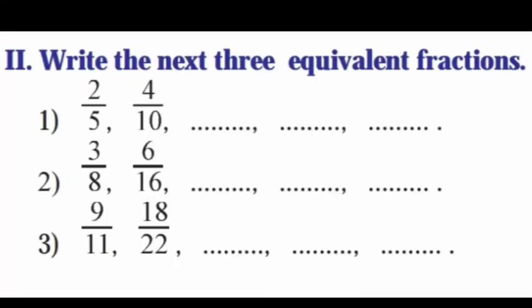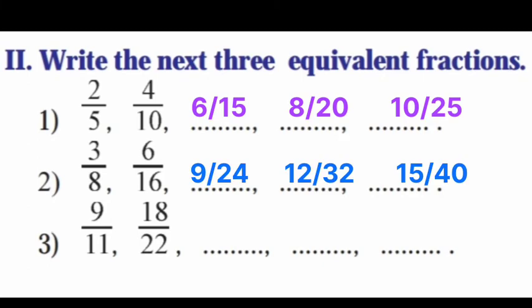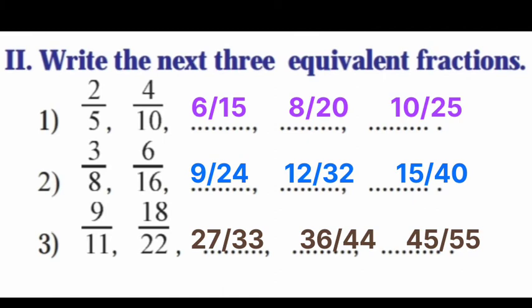Main 2: Write the next 3 equivalent fractions. First: 2/5 — 2 times 2 is 4, 5 times 2 is 10; 2 times 3 is 6, 5 times 3 is 15; next are 8/20 and 10/25. Second: 3/8 — 3 times 2 is 6, 8 times 2 is 16; next: 9/24, 12/32, 15/40.